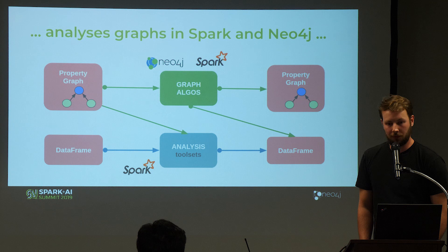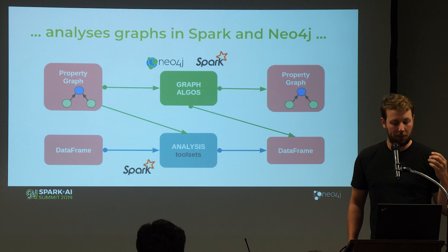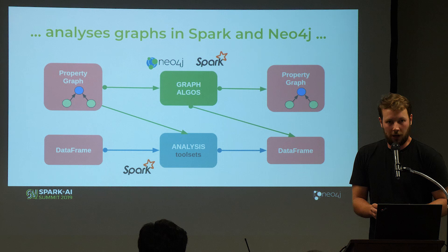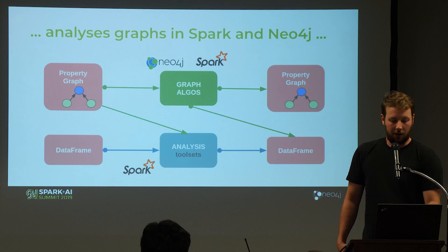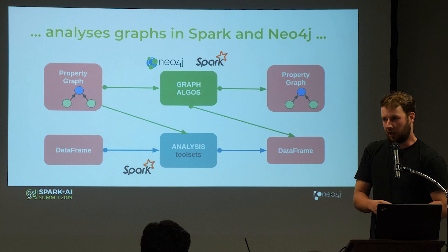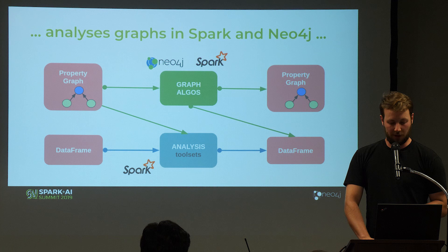The analytics workflow also starts with a property graph. We can use the data frames that the graph consists of and execute normal Spark jobs on it, and the output is again a data frame. On the upper path, we can write the property graph to the Neo4j Graph Algorithms Library and perform algorithms on it, getting back another property graph that can be processed recursively.